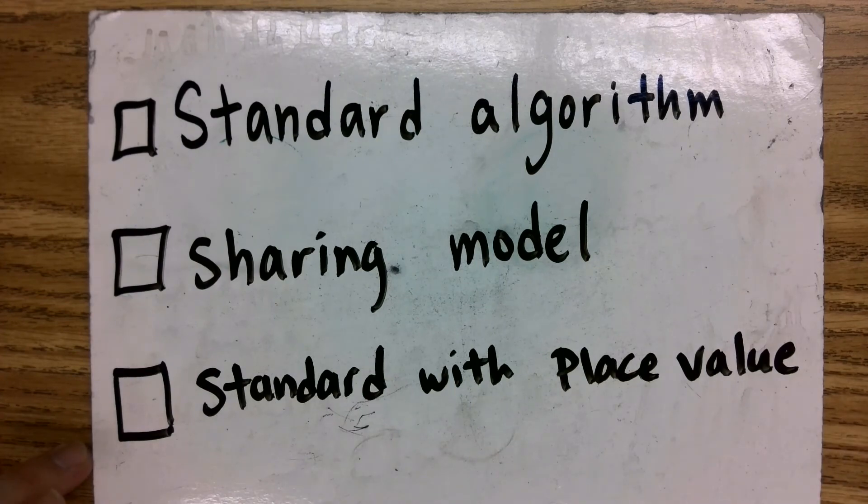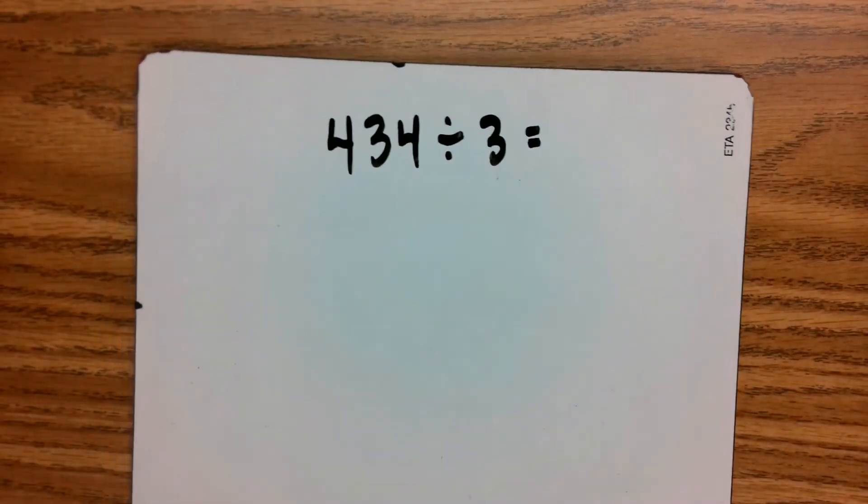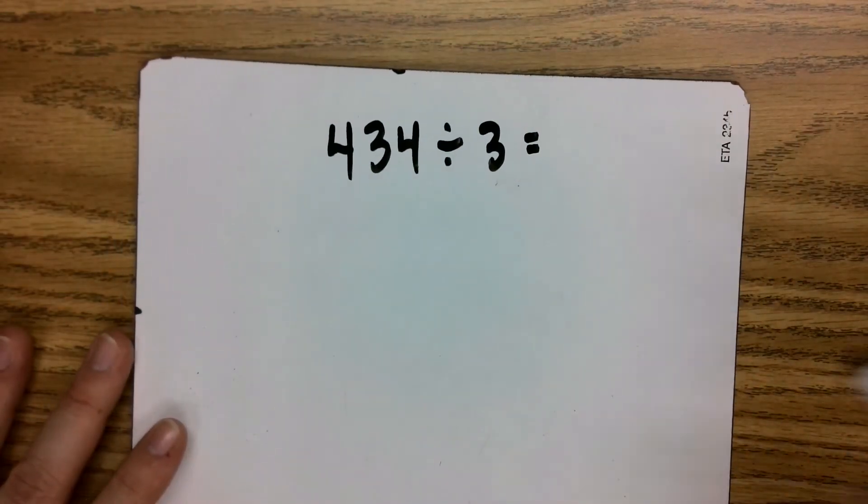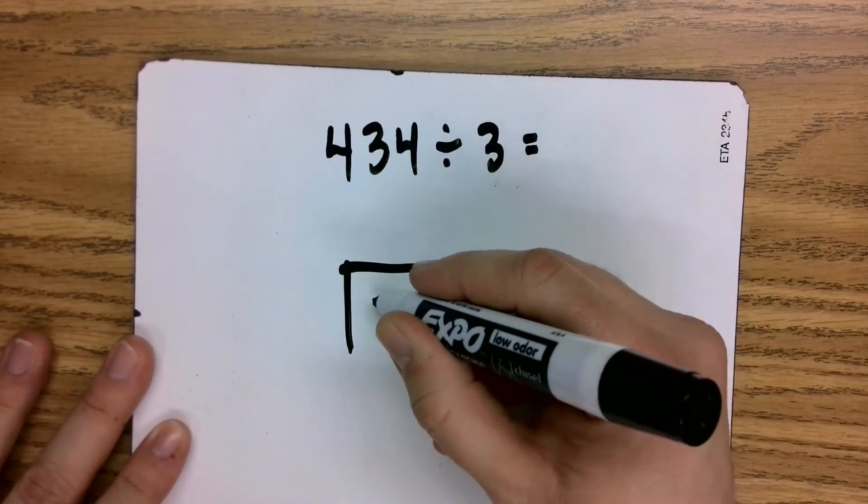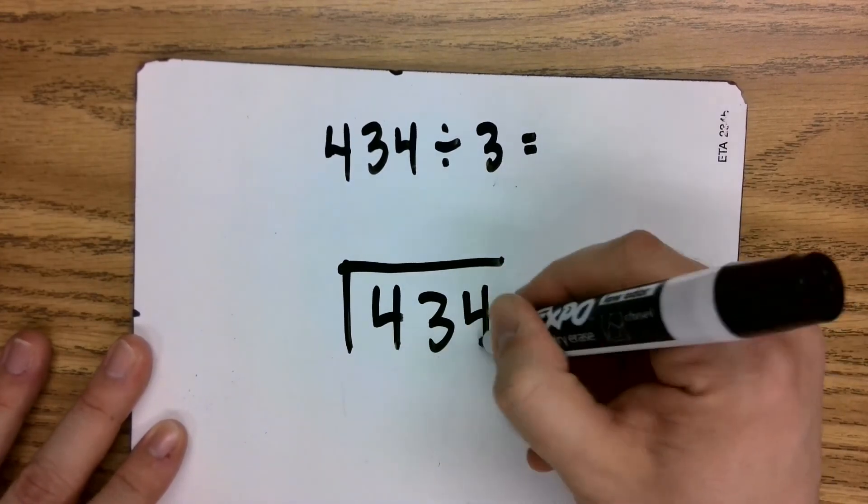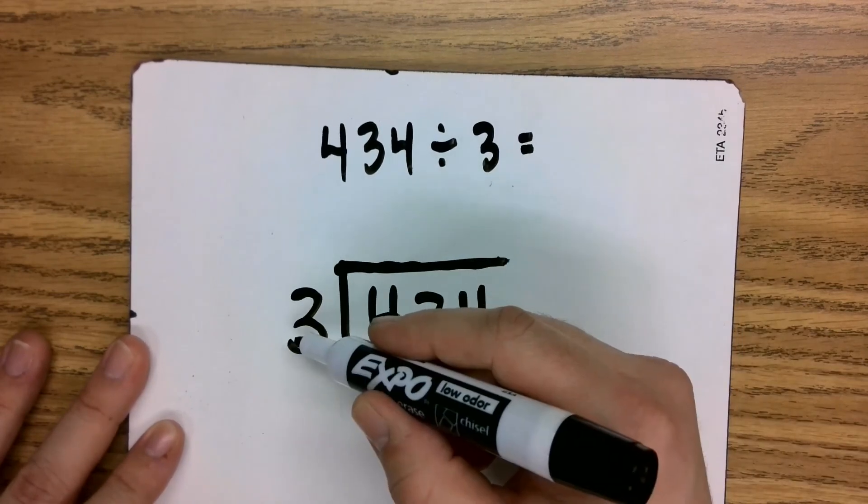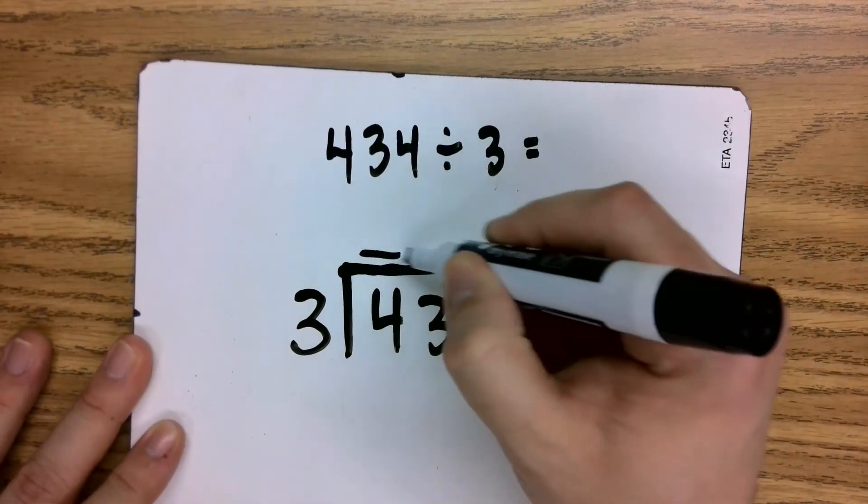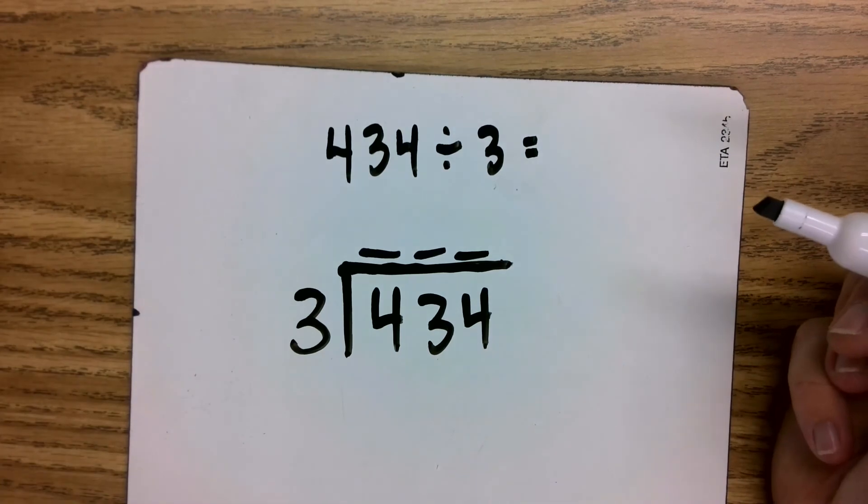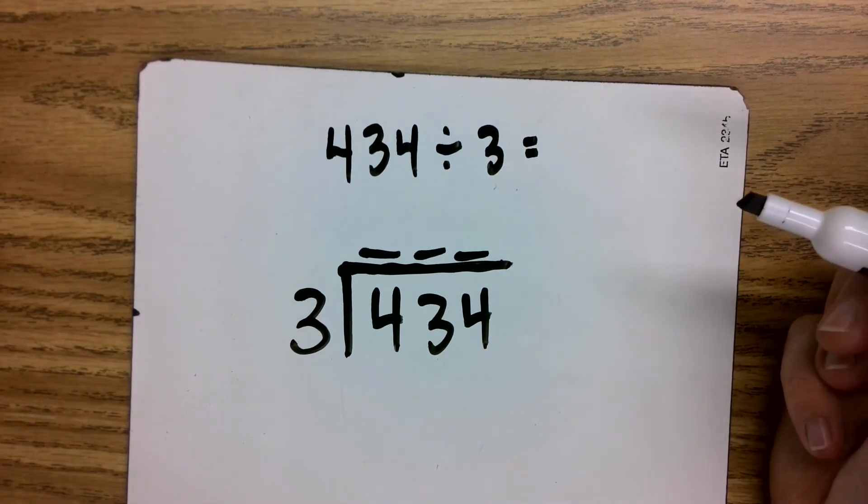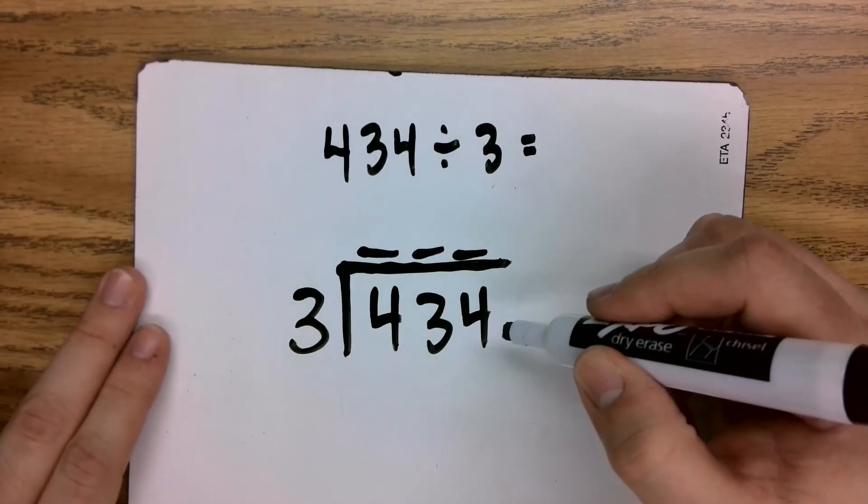So let's start with the standard algorithm. We're going to be doing our problem of the day, 434 divided by 3. We're going to bring the division house into play where we have the division house, the divisor out here, the dividend inside, and I will have our dashes up top showing that I need to at least ask the questions for these three numbers.